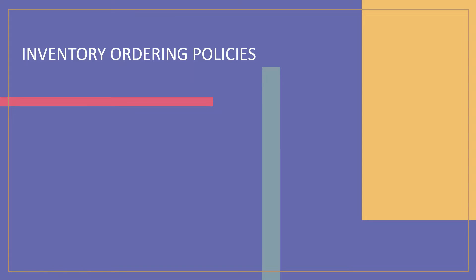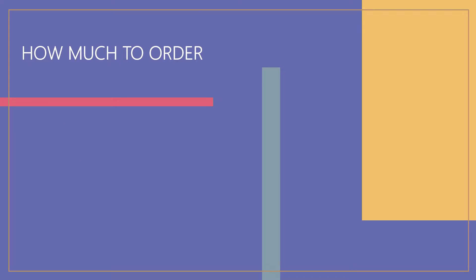Inventory ordering policies address the two basic issues of inventory management: how much to order and when to order. A number of models are described that are used for these issues. Inventory intended to meet expected demand is known as cycle stock, while inventory held to reduce the probability of a stockout — i.e., running out of stock — due to demand and/or lead time variability is known as safety stock.